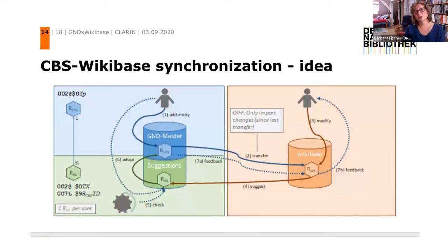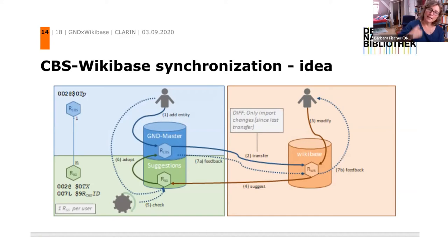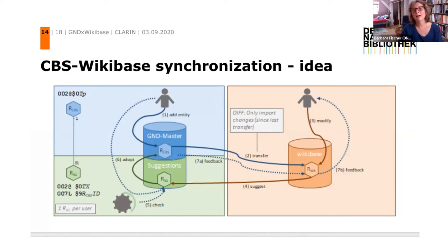On the next slide you can see a rough sketch of how we plan to make synchronization happen. On the right-hand side is the Wikibase instance, where the community can transfer new data, modify records, and make suggestions for new records. These are transferred to our GND master as suggestions, where a workflow certifies whether the suggestion is approved and then adds it to the master. We then need a workflow that transfers those new GND entities back into the Wikibase instance, though the technical coding behind this is still being worked out.